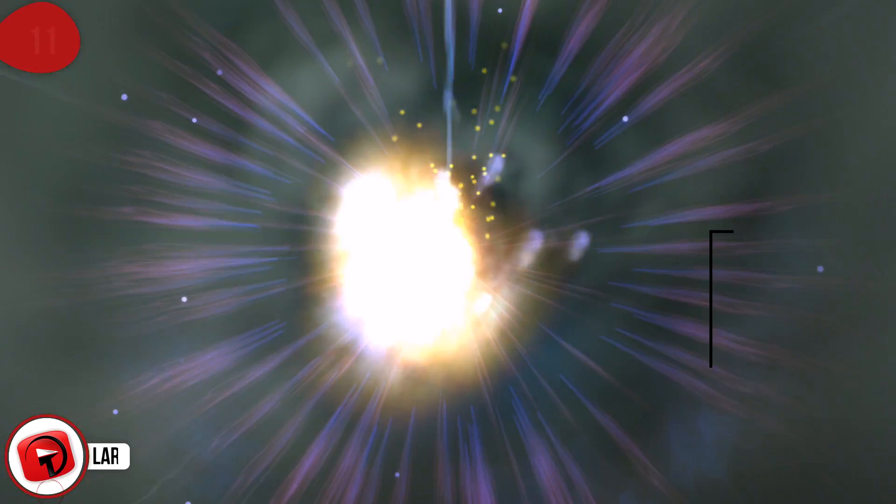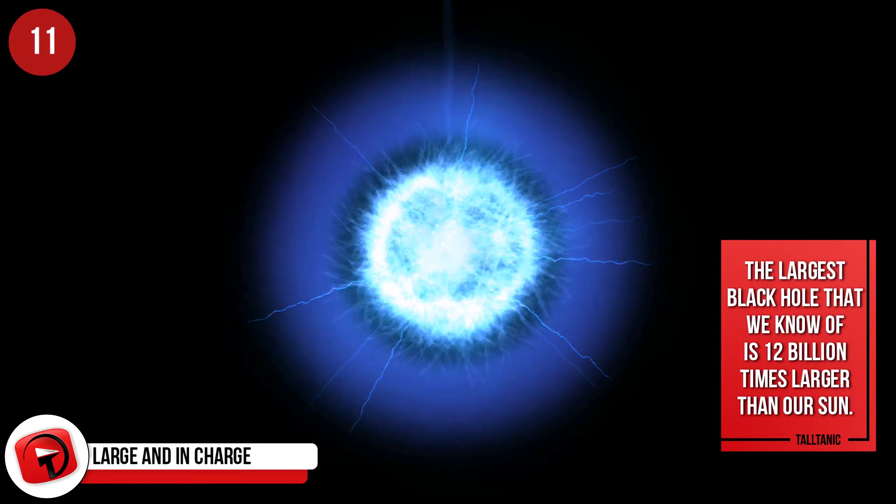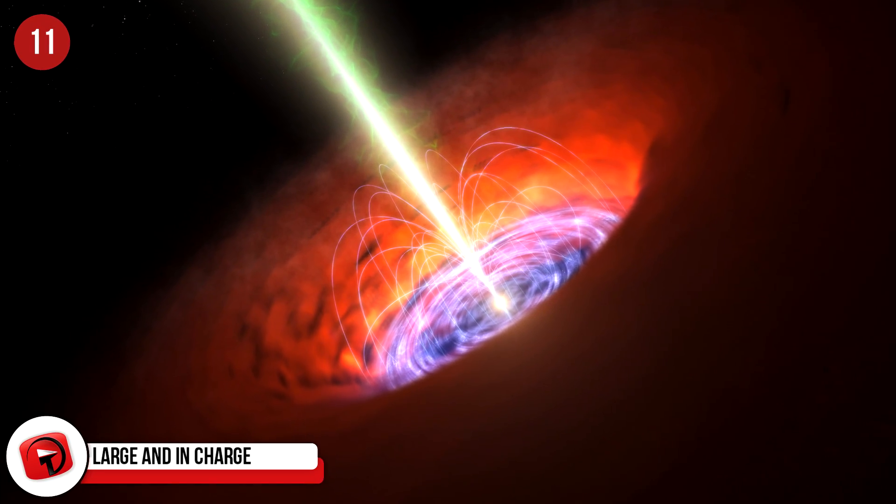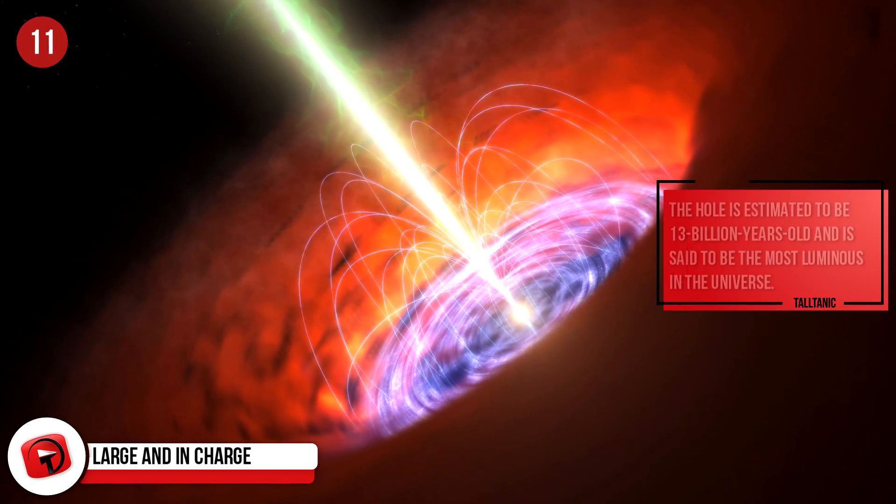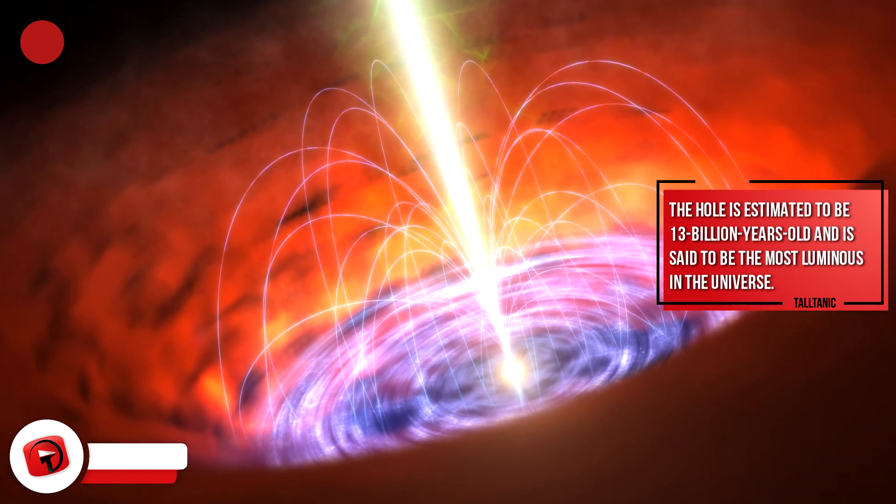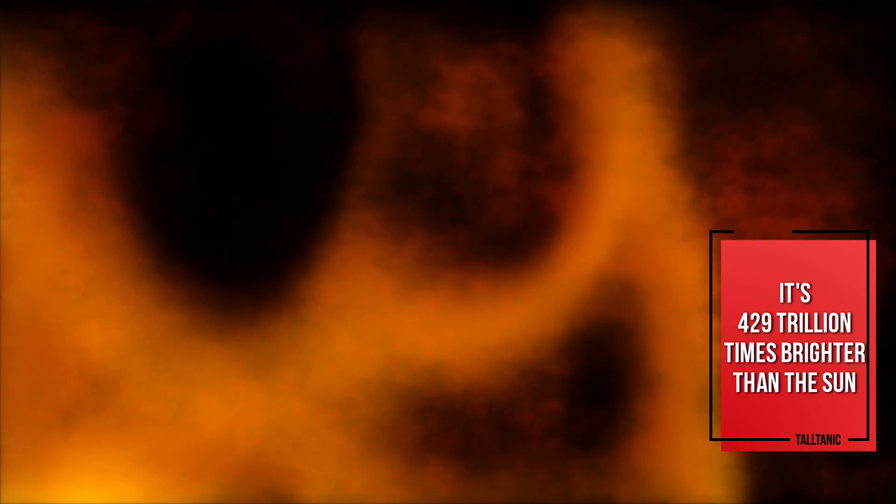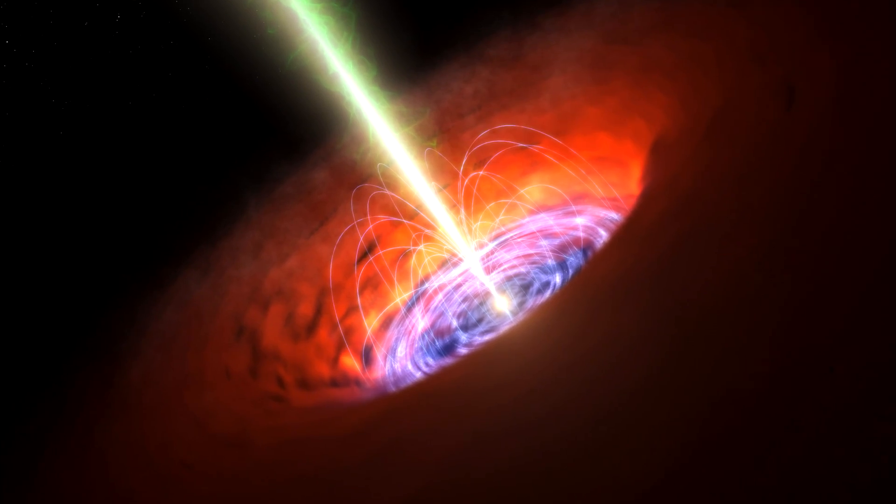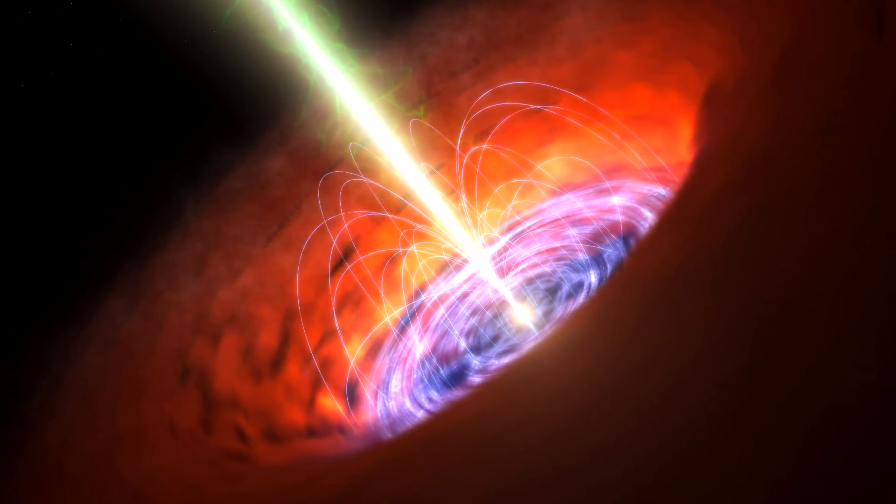Large and in Charge. The largest black hole that we know of is 12 billion times larger than our Sun. This was discovered in 2015, and has a name that involves around 15 letters and numbers. The hole is estimated to be 13 billion years old, and is said to be the most luminous in the universe. It's 429 trillion times brighter than the Sun, and scientists are hoping to make use of this light to research the darkest corners of the universe.